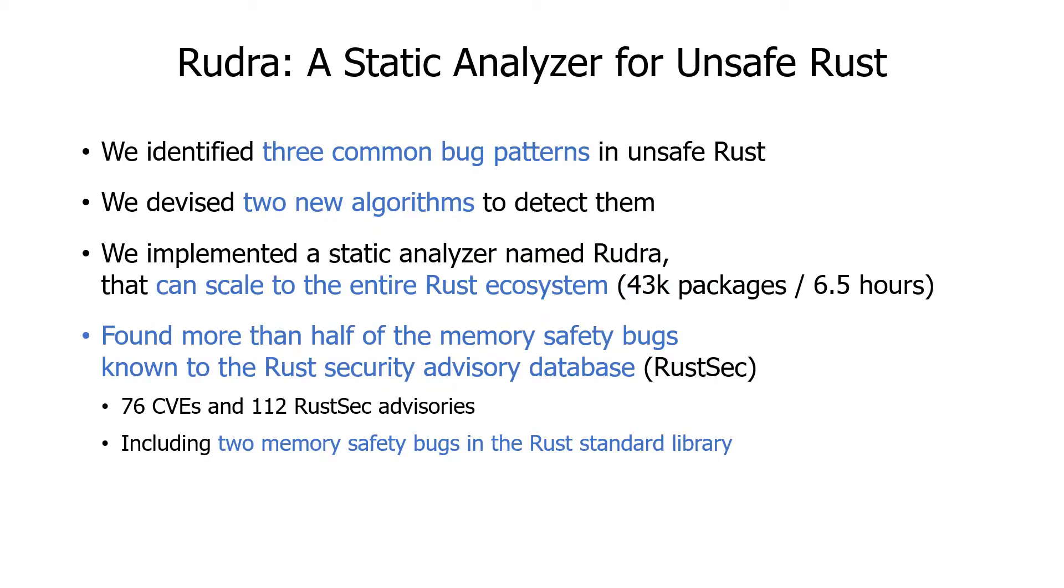In this talk, we introduce Rudra, a static analyzer for unsafe Rust. The outline of the talk is as follows. First, we identified three common bug patterns in unsafe Rust by reviewing known unsafe Rust bugs and auditing famous Rust packages. We devised two new algorithms to detect these bugs and formulated them as a static analyzer named Rudra that can scale to the entire Rust ecosystem.